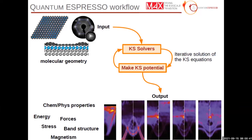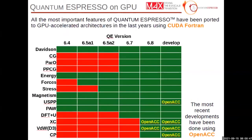With shorter simulation times we can treat more interesting molecular systems. Here is the roadmap we followed over the last years. In version 6.7, released in November 2020, all the main features of the core part — the PWSCF — were ported to GPU using CUDA Fortran. Then in the next release, 6.8, released in July 2021, pieces of code written in OpenACC were included for the first time.